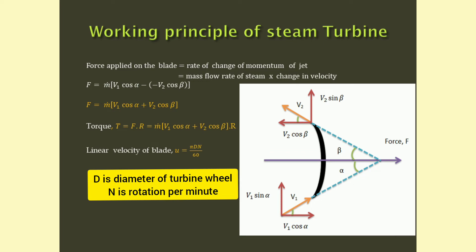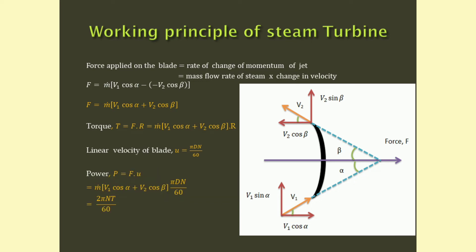We can write the linear velocity of the blade as u equals pi·d·n divided by 60, where d is the diameter of the wheel and n is the rotation per minute. We can write the power developed as p equals force into linear velocity, that is, f into u. When we substitute the expressions of force and velocity, we get power as 2·pi·n·T divided by 60, where T is the torque developed.